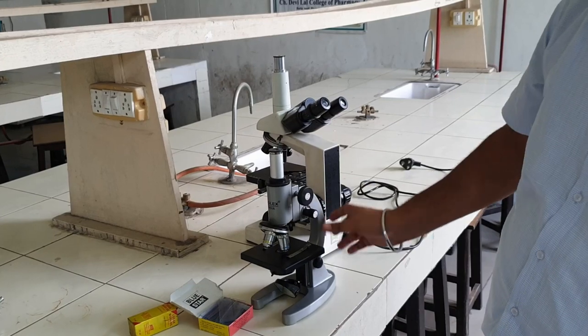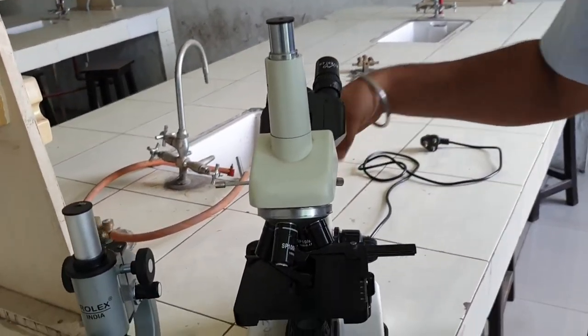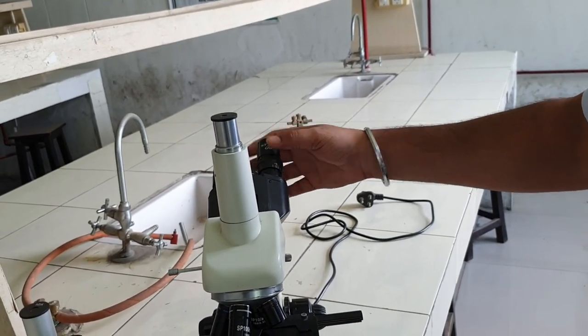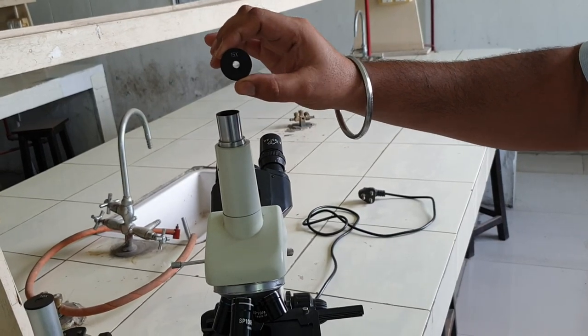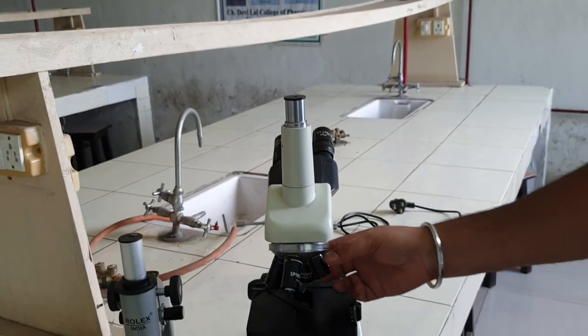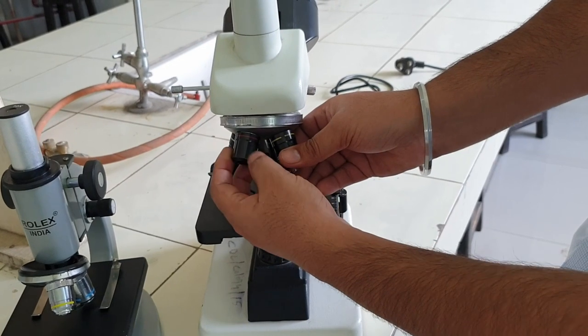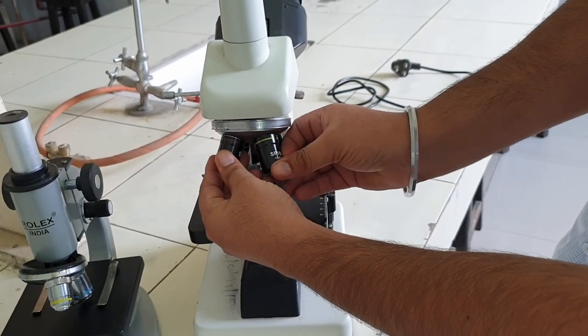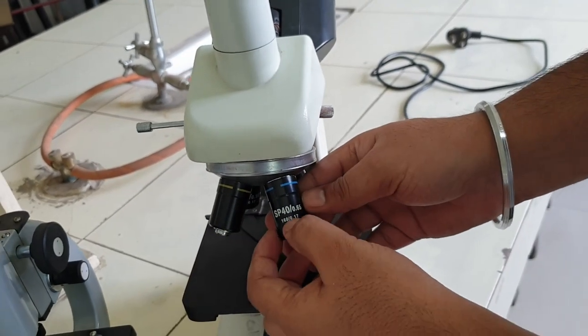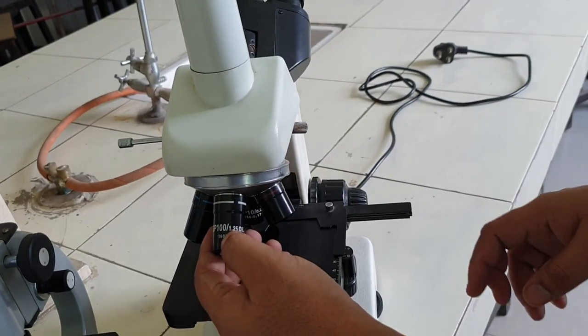If we talk about the other microscope, the eyepiece lens is also 10x. This is 4x objective lens, this is 10x objective lens, this is 40x objective lens, and this is 100x objective lens.